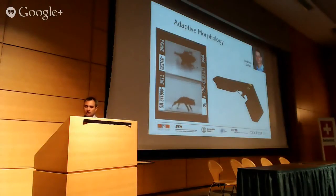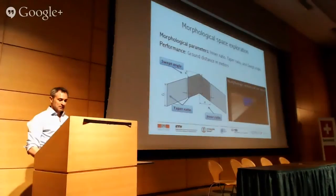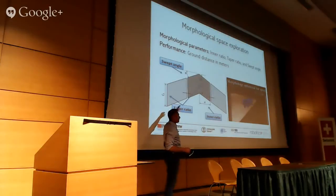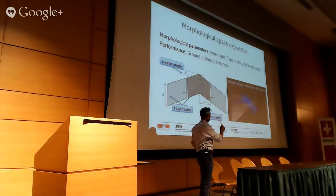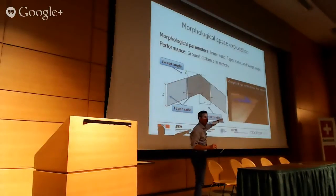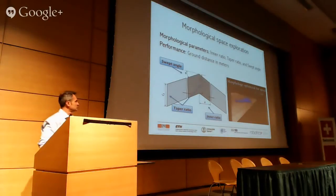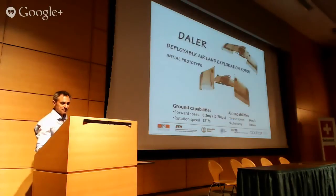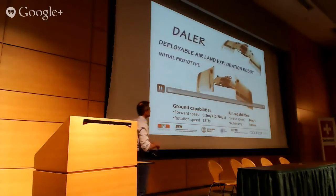We started looking at how to transform that type of drone into a robot that can also walk on the ground. PhD student Ludovic Daler decomposed the problem of morphology into three parameters, characterized the efficiency of the robot for different values generating different morphologies, and evaluated its capability to fly and locomote on the ground. Out of a physics-based simulation, we ended up with a parameter set used to create our first prototype of a deployable air-land exploration robot.